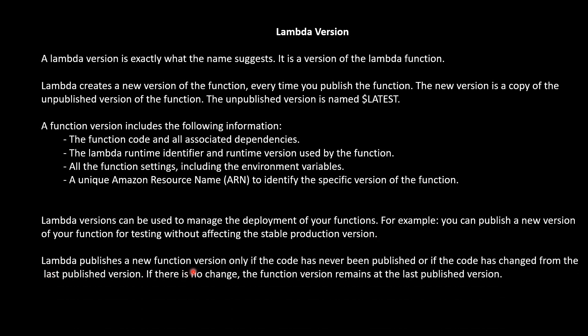Lambda publishes a new version only if the code has never been published, or if the code has changed from the last published version. If there is no change, the function version remains at the last published version. The unpublished version is named $LATEST and it is the mutable version of the function. Mutable means we can change the code, environment variables, or other configuration. Whereas when we publish a version, it becomes immutable — versions cannot be changed.